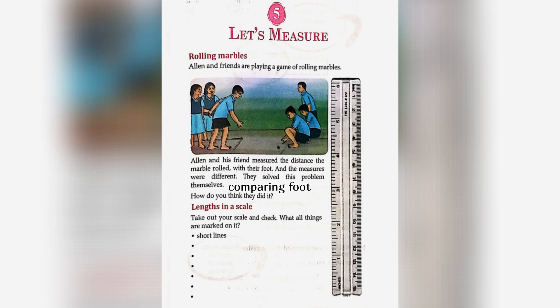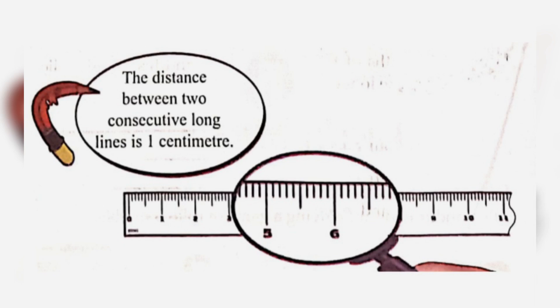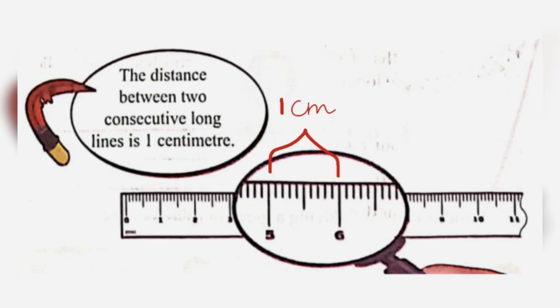A scale has short lines, long lines, numbers, inches, millimeters, centimeters, and medium lines. The distance between two consecutive long lines is 1 centimeter. In this figure, we can see there are two long lines above 5 and 6, so from 5 to 6 it will be 1 centimeter.